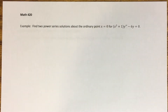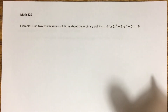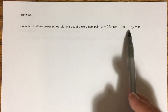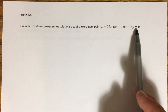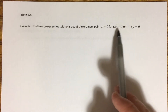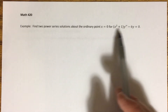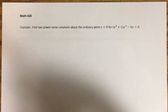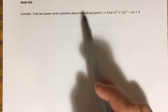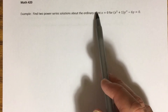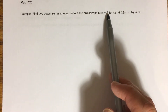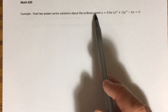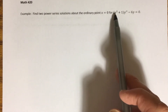Our last video, the entire 20 or so minutes of it, was devoted to one example, and now we're going to move on to another example. It's going to be a very similar process, but this will just give you more to go on. We're looking at the DE: (x² + 1)y'' - 6y = 0. These tend to be homogeneous equations, and that's intentional, because the equals zero is what allows us to use the identity property. We're also looking for a solution about the ordinary point x = 0. We're just taking for granted that it's an ordinary point.